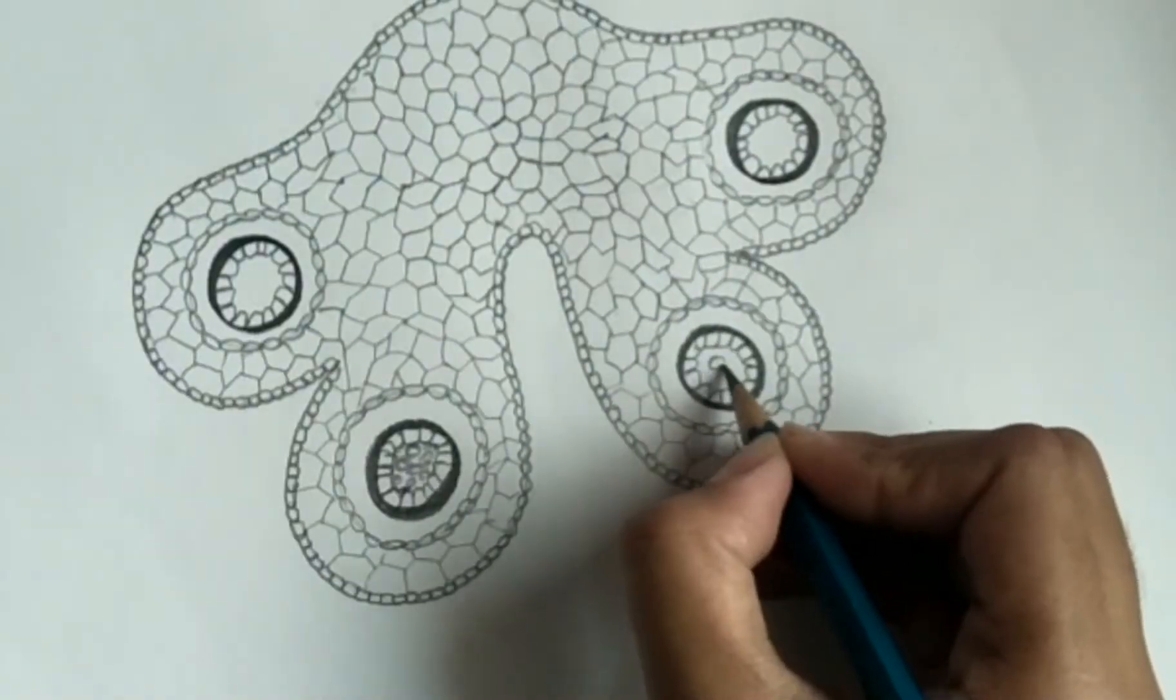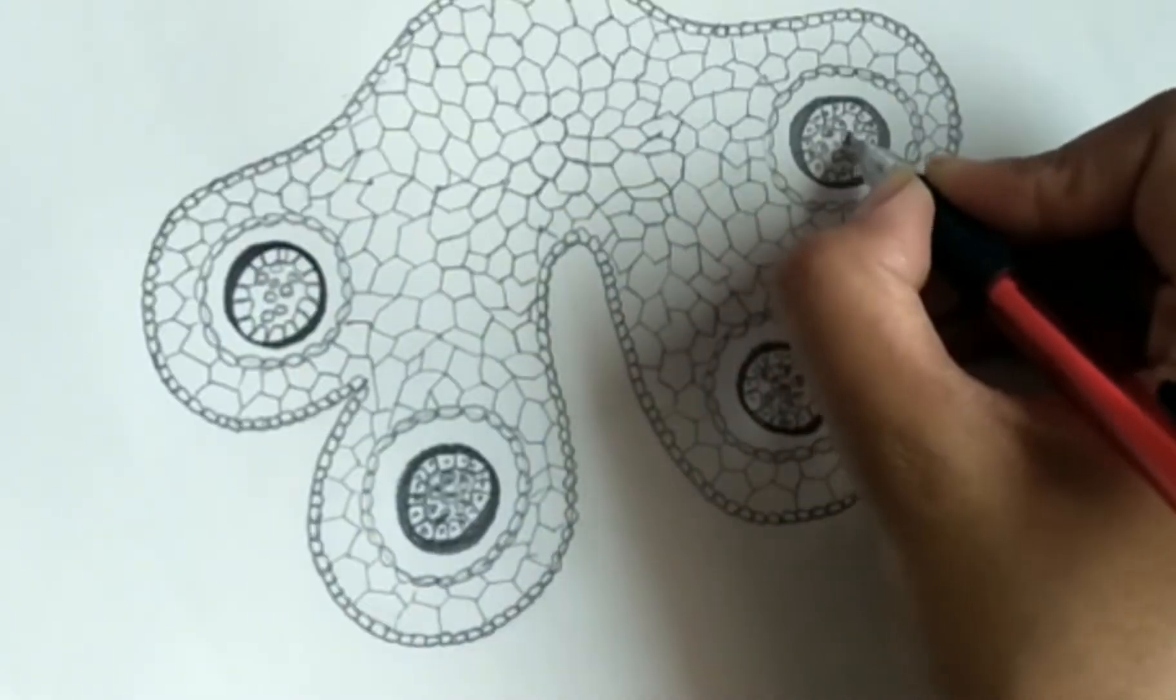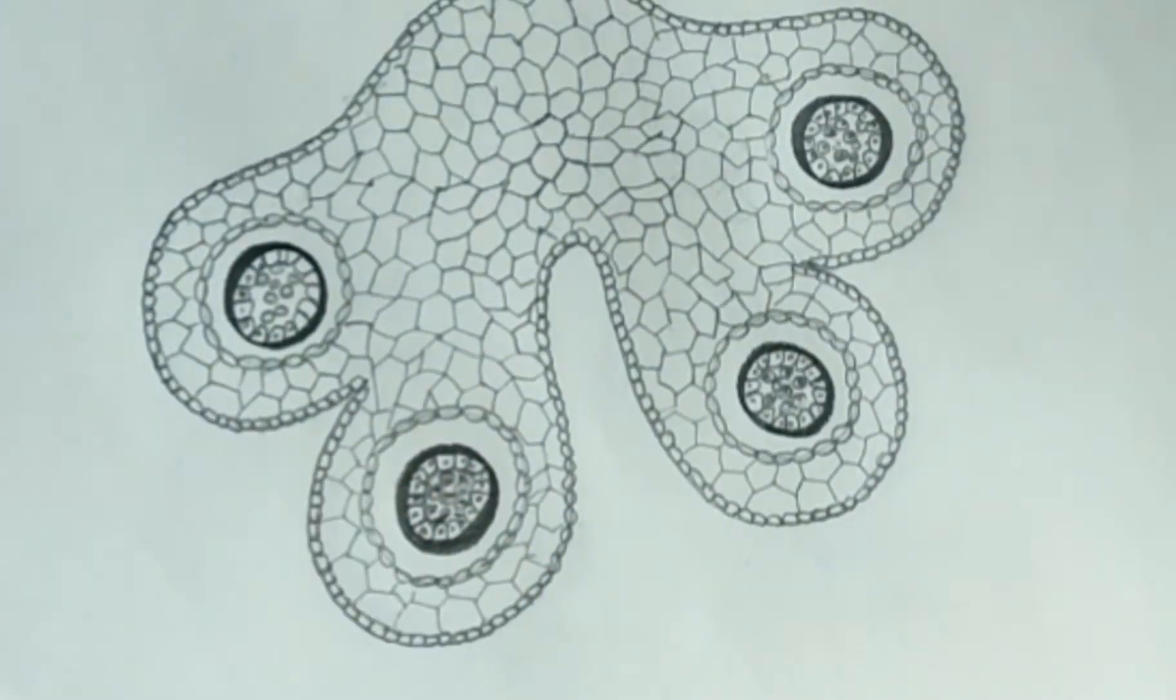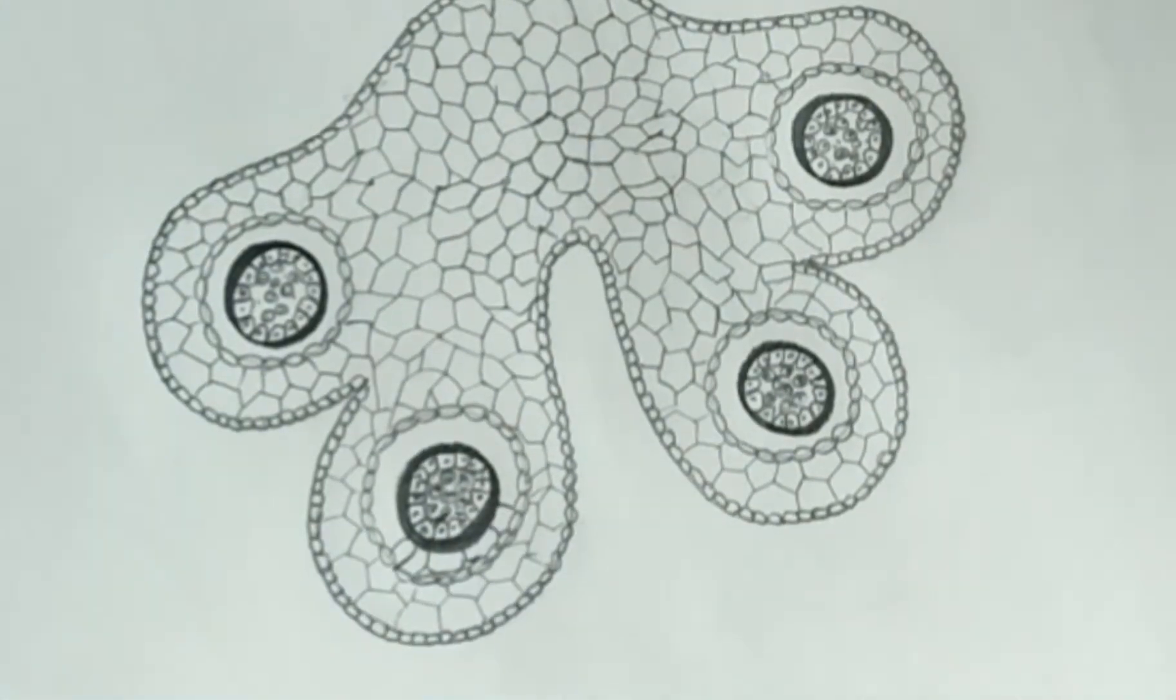Next to the tapetum are sporogenous tissue and microspores. Sporogenous tissue fills the whole interior of the microsporangium.